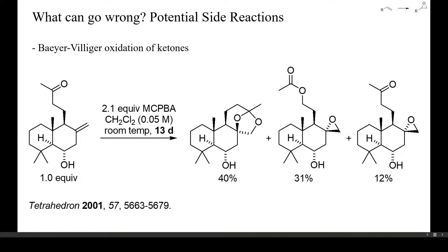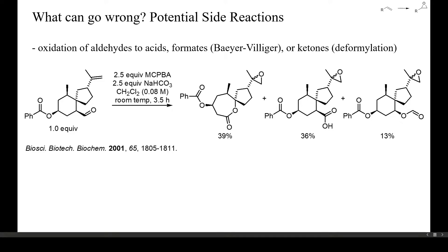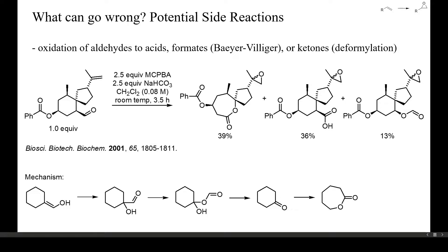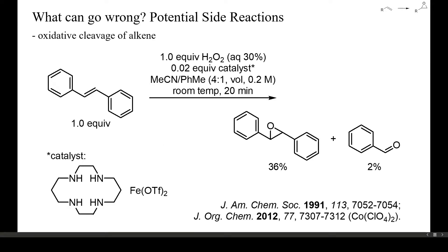Neutral or mildly alkaline conditions may help to suppress the Baeyer-Villiger side reaction. The poor result in the example shown here was probably also caused by the excessively long reaction time. Aldehydes are readily oxidized to carboxylic acids and may also undergo oxidative decarbonylation during epoxidations, as in this example. The lactone was probably formed by alpha-hydroxylation of the formyl group, followed by two-fold Baeyer-Villiger oxidation. Occasionally, alkenes are cleaved during epoxidations, in particular in the presence of transition metals such as iron, cobalt, copper, or manganese. In this example, a small amount of benzaldehyde was formed during epoxidation of stilbene, but carboxylic acids are the more common by-products.